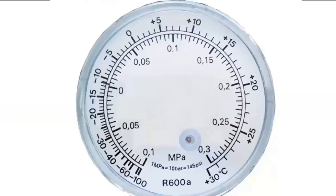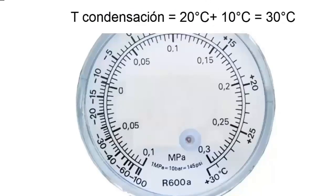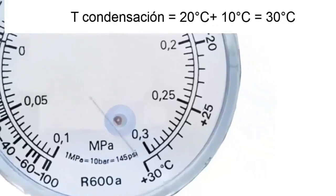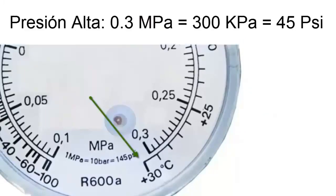Now we are going to verify what will be the value of the high pressure. For an environment of 20 degrees Celsius, we are going to have an average condensing temperature of about 30 degrees Celsius. Now let's set the needle to 30 degrees Celsius and note the pressure value.